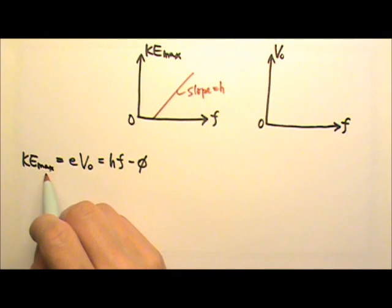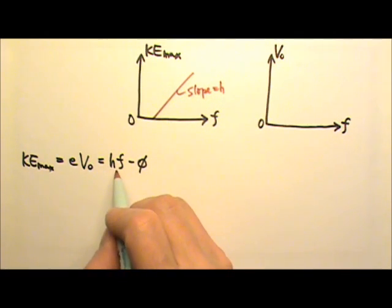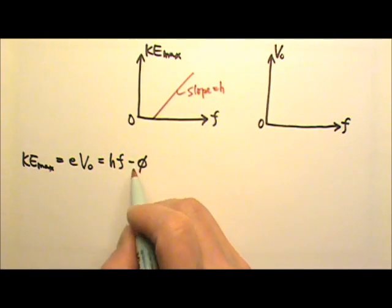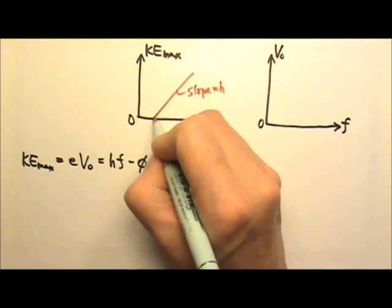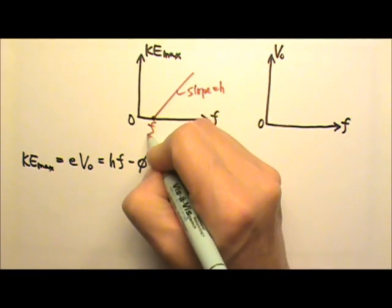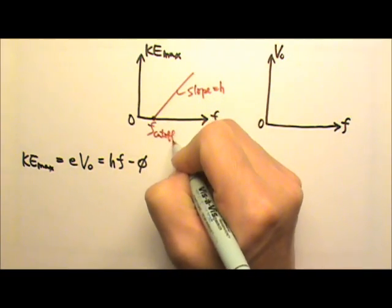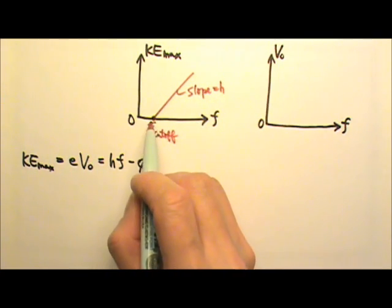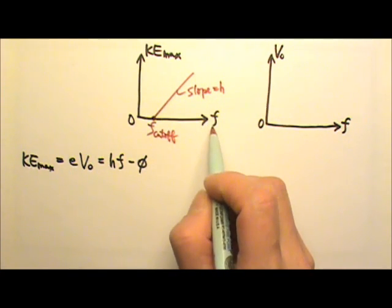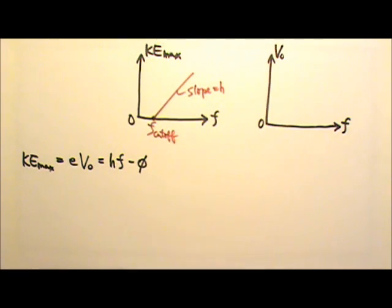And there's an intercept over here. The X intercept is the X value when the Y value is 0. So if I make the maximum kinetic energy 0, that means HF equals to phi. When HF equals to phi, this frequency is the cutoff frequency. So this X intercept is the cutoff frequency. Of course, this X intercept must be a special frequency, so it must be the cutoff frequency.